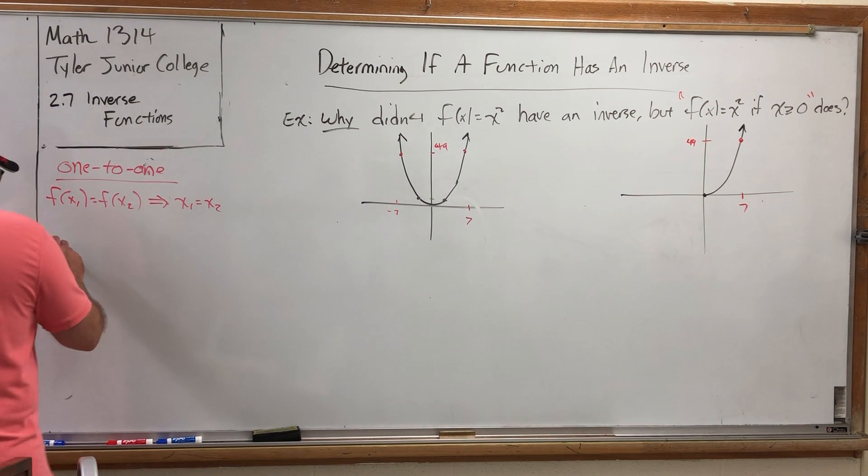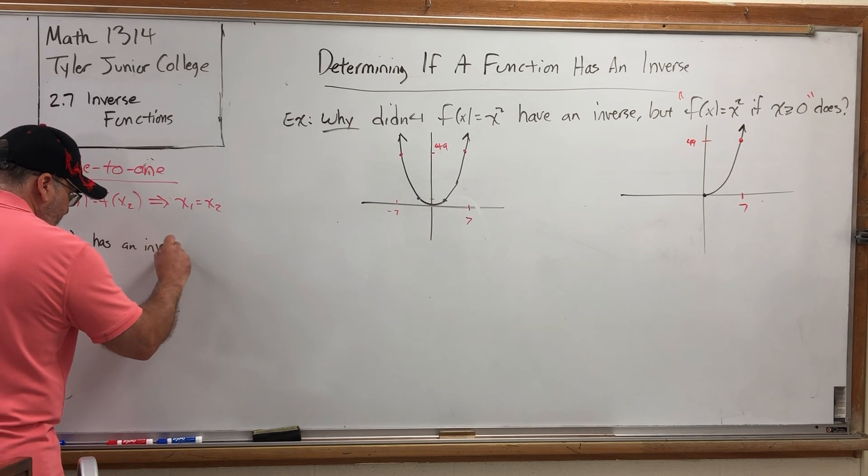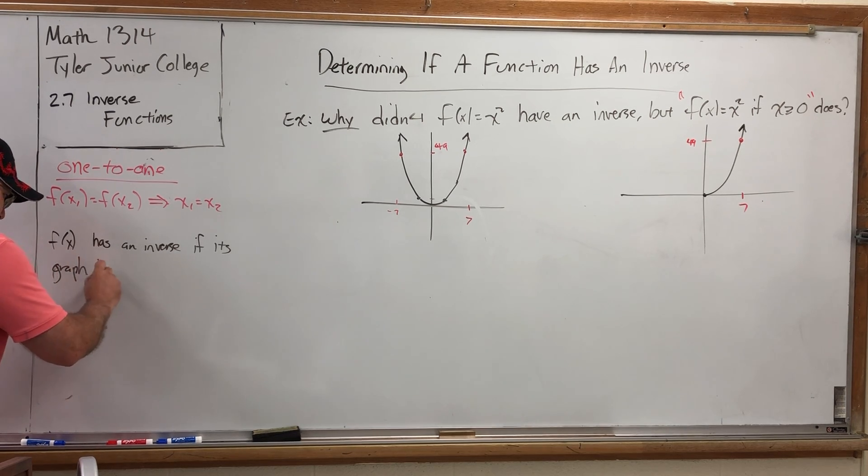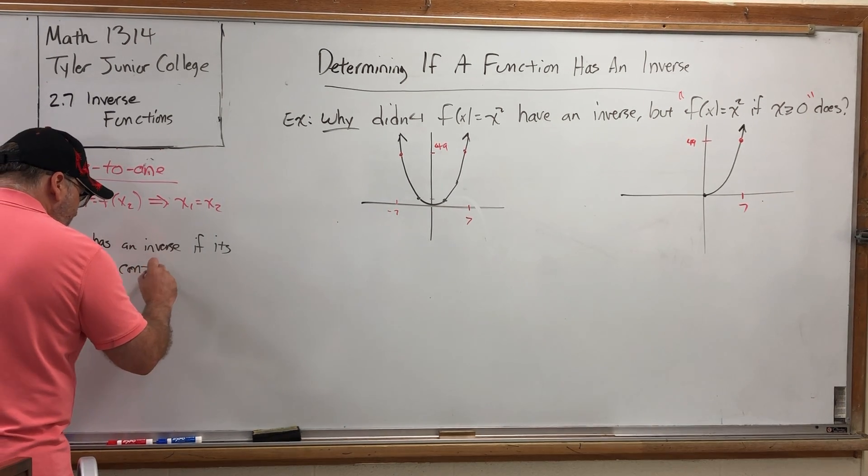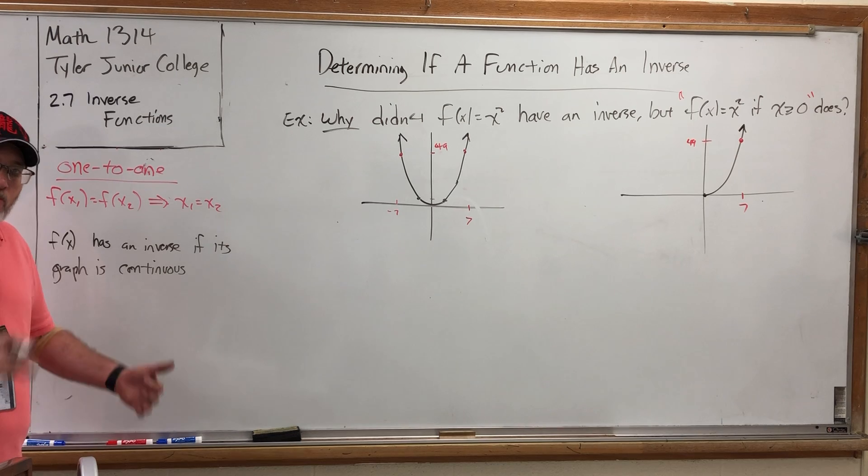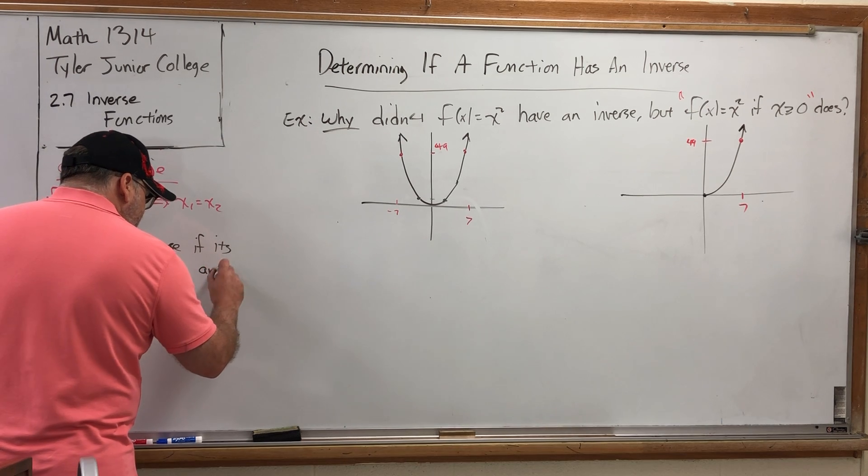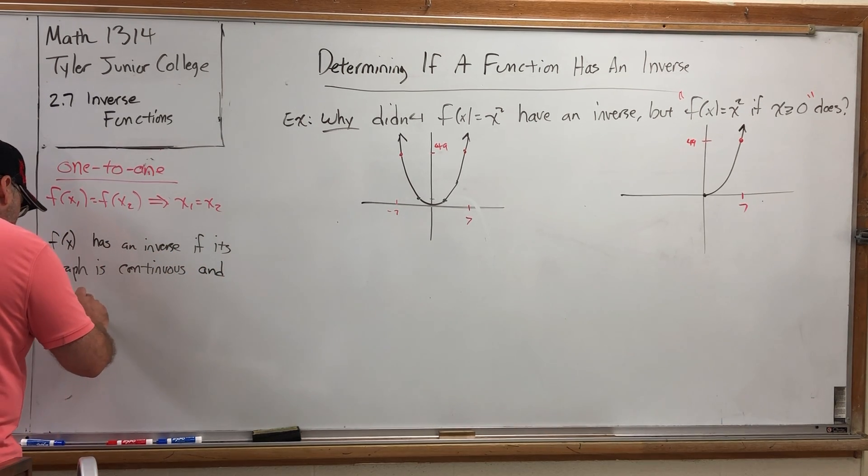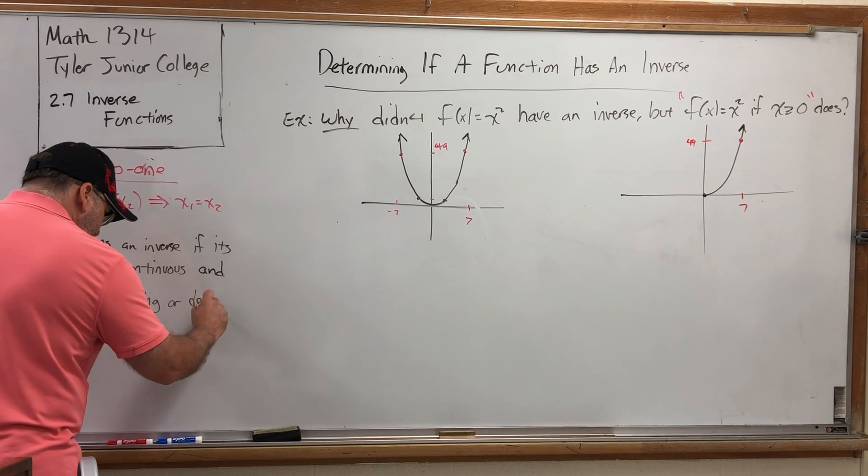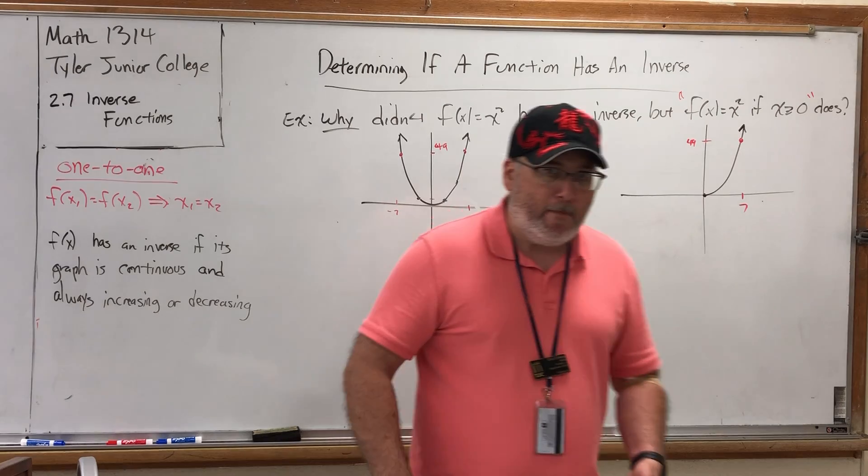So from a graphical perspective, you can say that f of x has an inverse if its graph is, and I'm going to have to borrow a calculus word, continuous, but for our purposes, what that basically means is it's one complete piece, not two or more pieces, like the graph of the reciprocal function. If it is continuous, and always increasing or decreasing, one or the other, but not both.